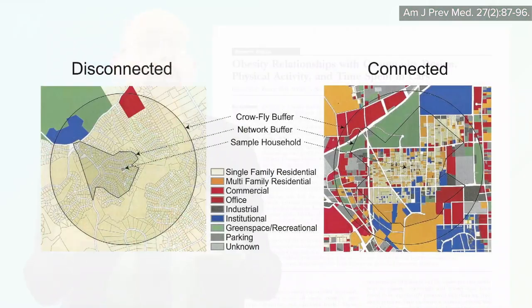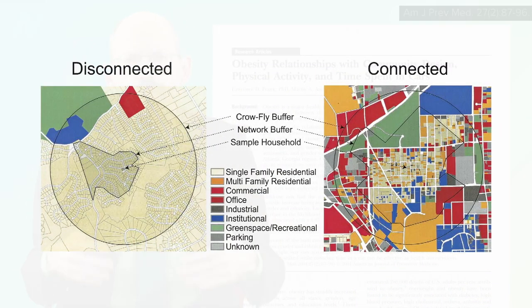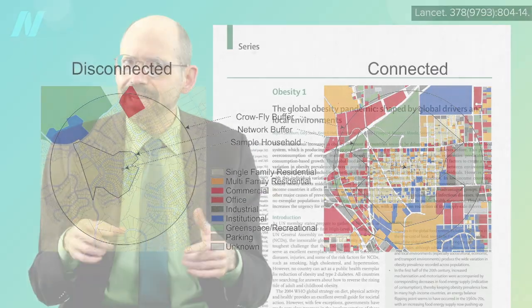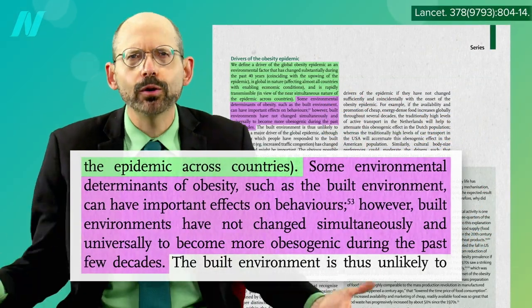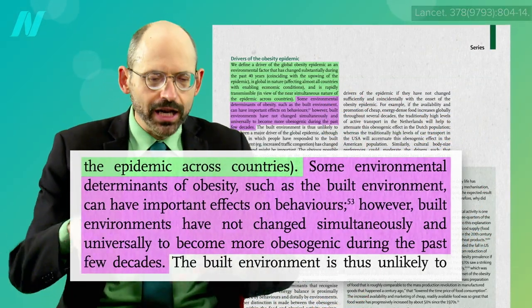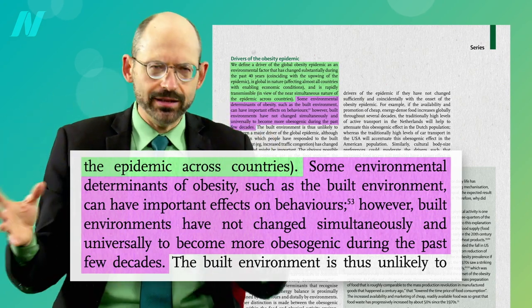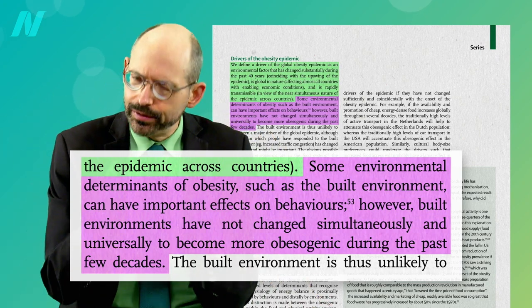For example, some have blamed changes in our built environment, shifts in city planning that have made communities less conducive to walking, biking, grocery shopping. But that doesn't meet our criteria for a credible cause, because there wasn't a universal, simultaneous change in our neighborhoods within that time frame.